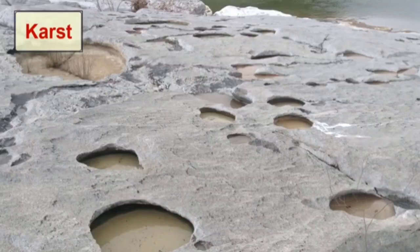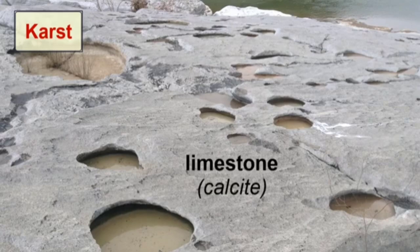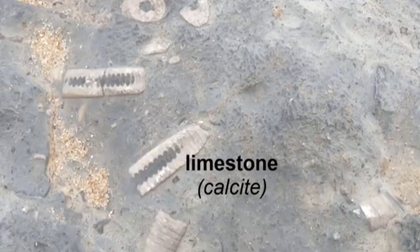The term karst refers to geographic areas that display landforms produced by the dissolution of surface rocks. Typically, these regions consist predominantly of limestone, a sedimentary rock made of calcite. In limestone, calcite is usually in the form of microscopic crystals that are recrystallized shells or exoskeletons of organisms such as corals that lived in the area at some time in the past. Often, we will see fossils of these ancient organisms in the limestone, as the calcite simply replaces the organic material and maintains the same shape.